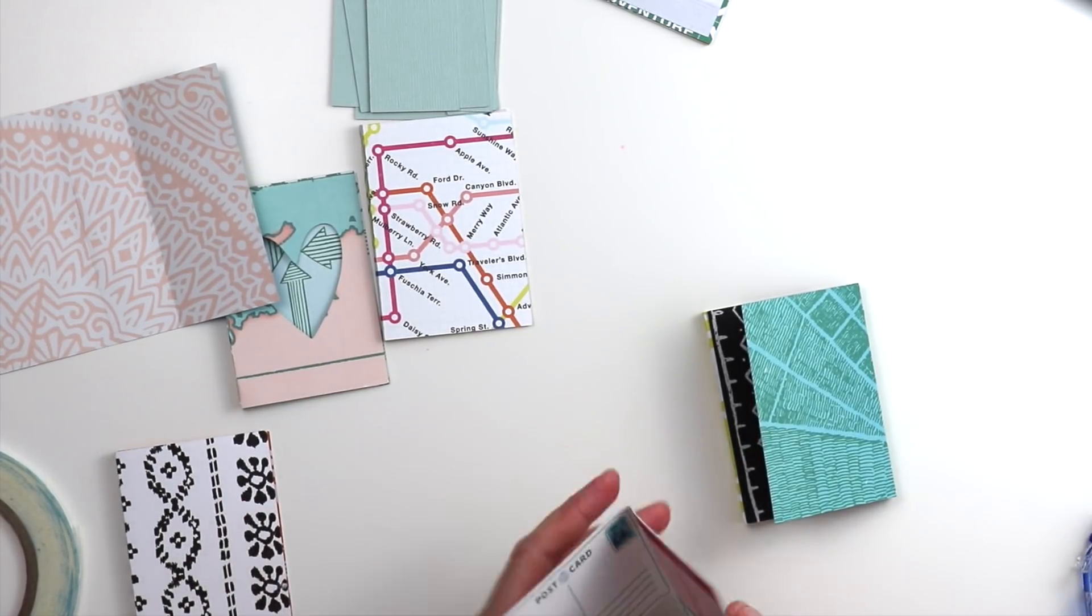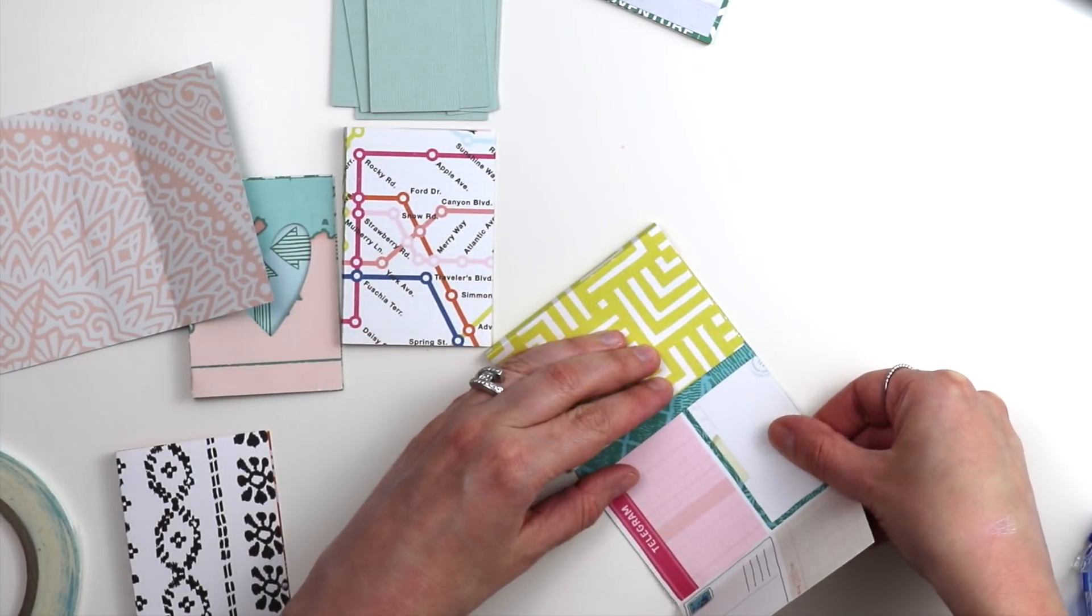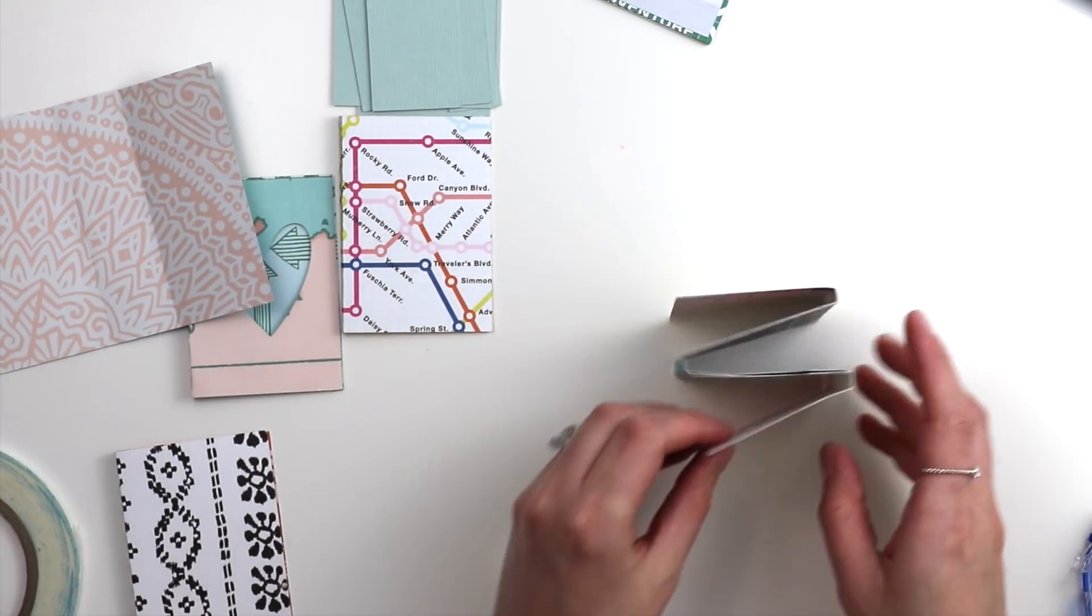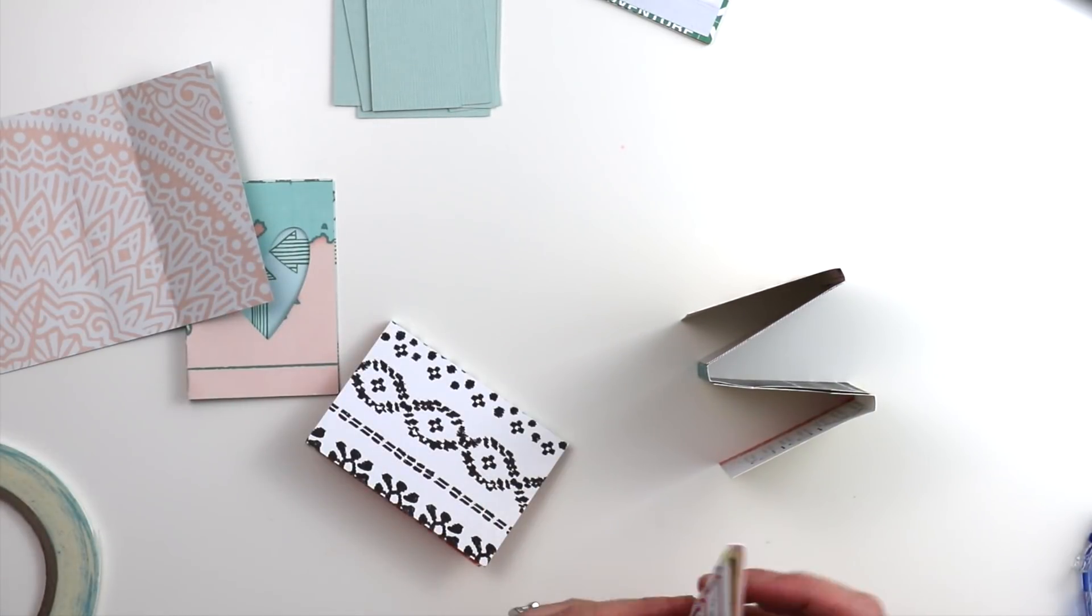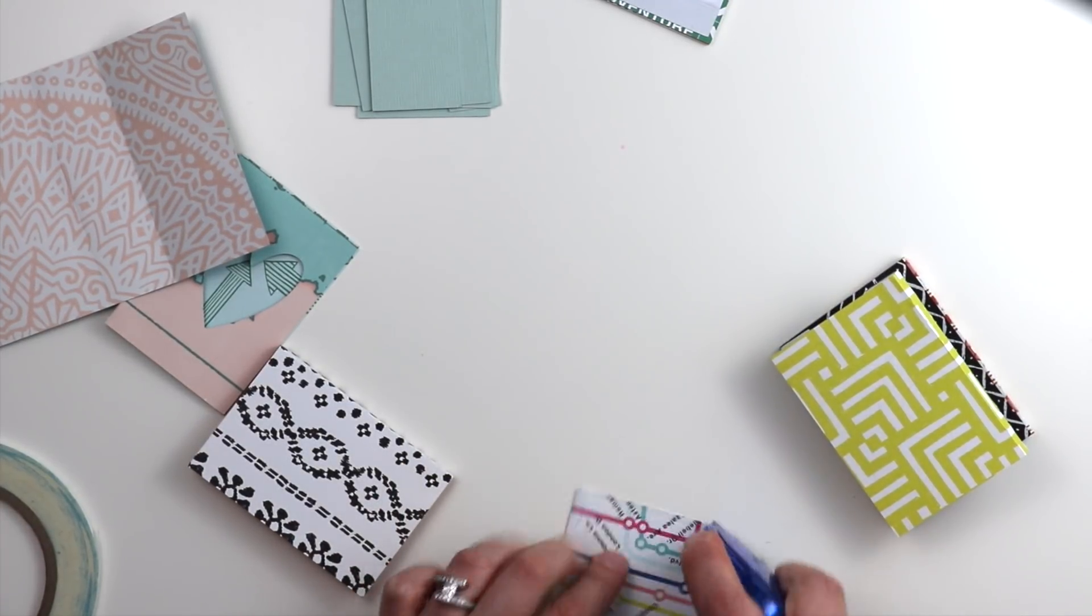The easy way to do that is to just not put adhesive along the top edge. So only place adhesive along the left edge, the right edge, and the bottom, and that creates pockets in between each page. I love having pockets so that I can tuck additional tags, additional ephemera, additional photos into the mini albums.